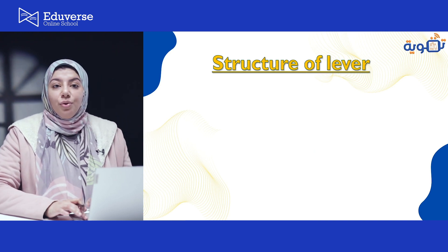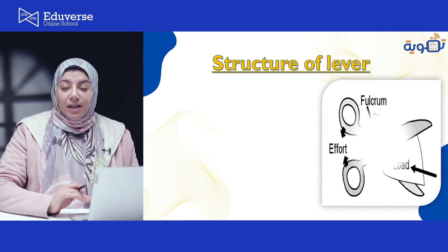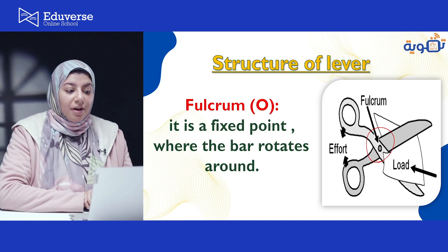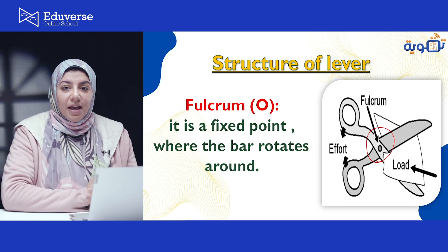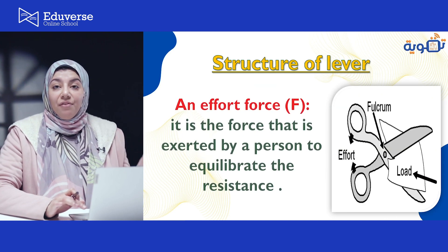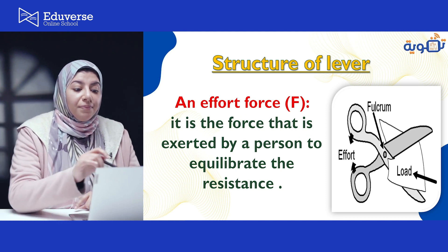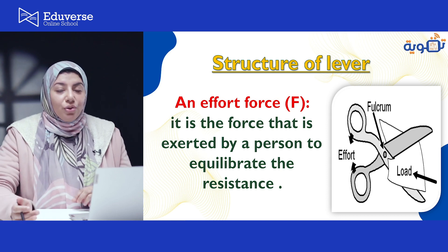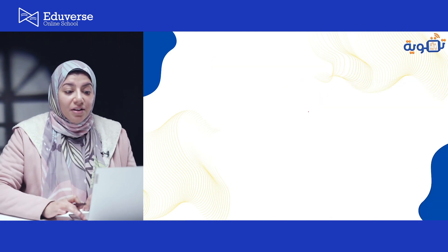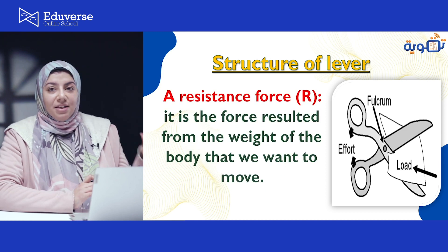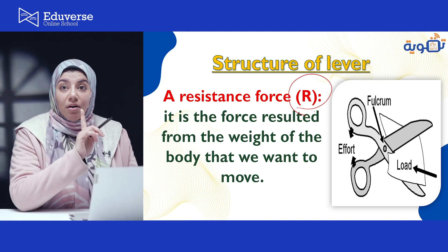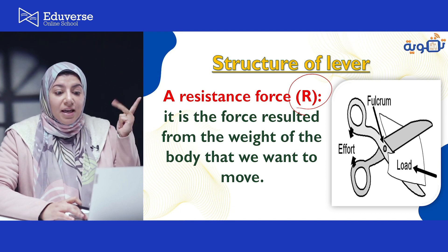Let's look at the structure of a lever. It consists of three parts. First, the fulcrum — it's the fixed point where the bar rotates, symbolized by the letter O. Second, the effort force — the force exerted by a person to overcome the resistance, symbolized by letter F. Third, the resistance force — the force resulting from the weight of the body you want to move, symbolized by letter R.